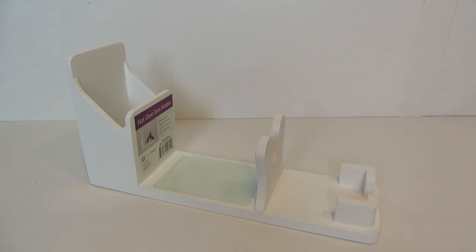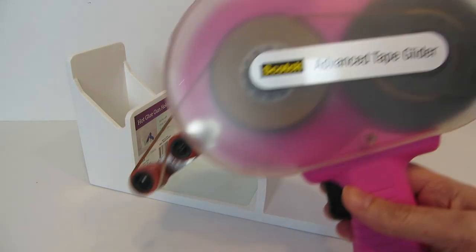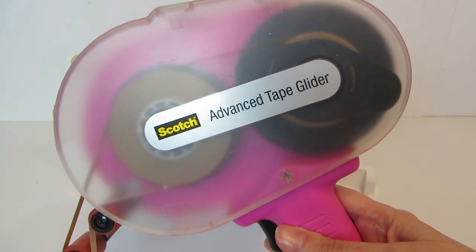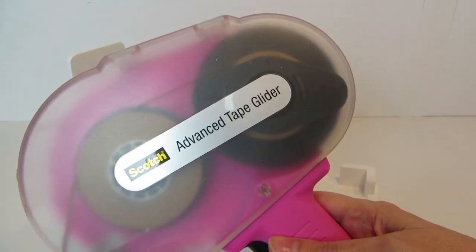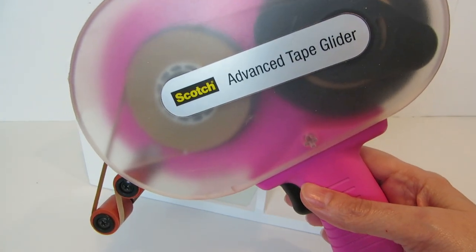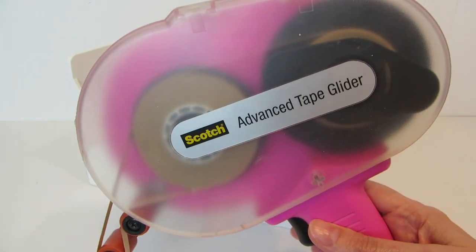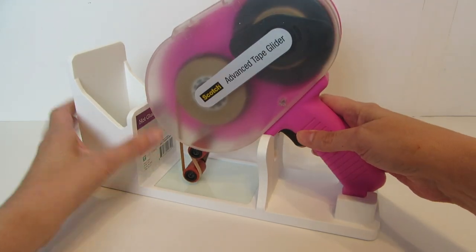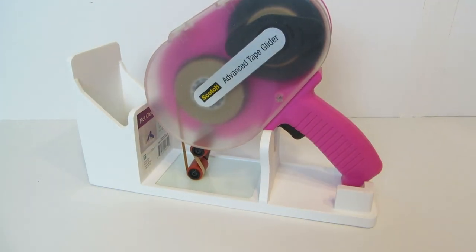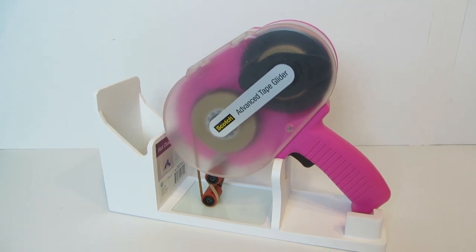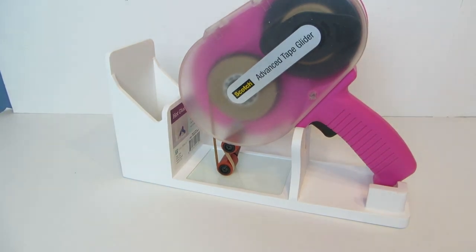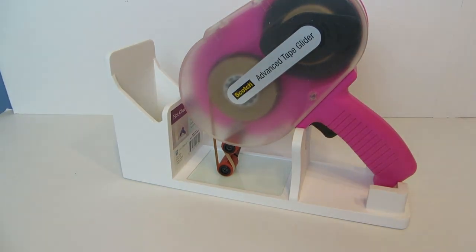I also grabbed a large tape runner. This is an Advanced Tape Glider, it's also called an ATG. It originally was used in frame shops for doing framing, but a lot of scrapbookers and card makers discovered that it was really great for taping down your projects. And that is the perfect holder for the tape runner, for the ATG gun.